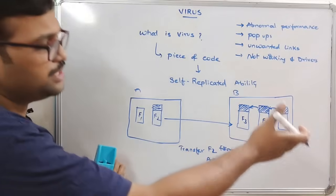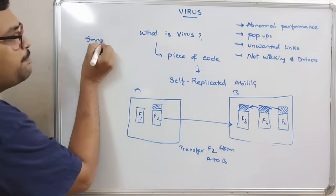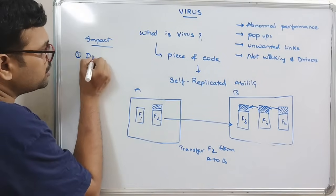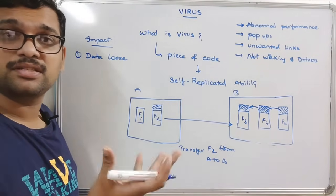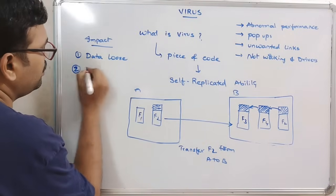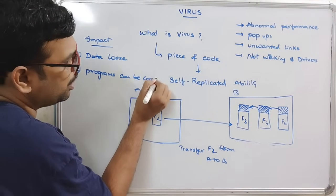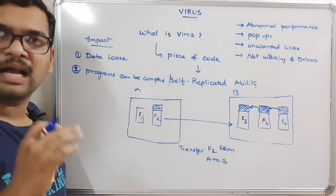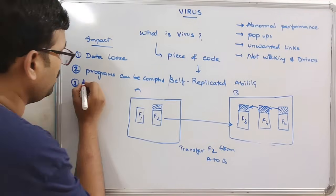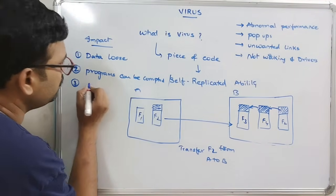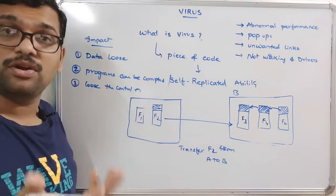Now, what is the impact if the virus affects our programs? First, there is data loss — whatever data we have stored in our system can be lost. Programs can also be corrupted, meaning all the programs available can be corrupted and files will not open.